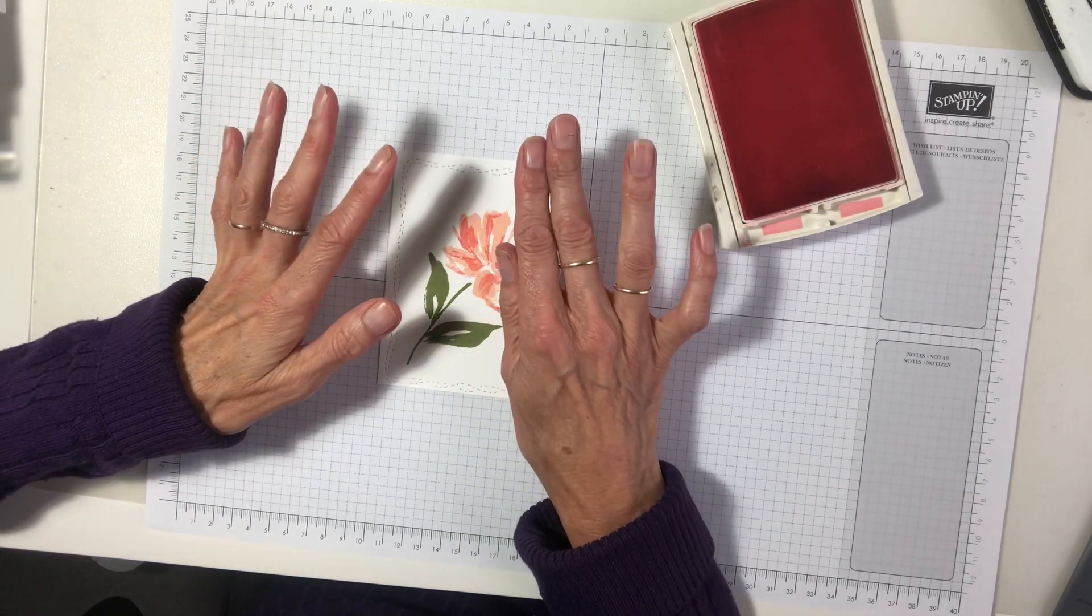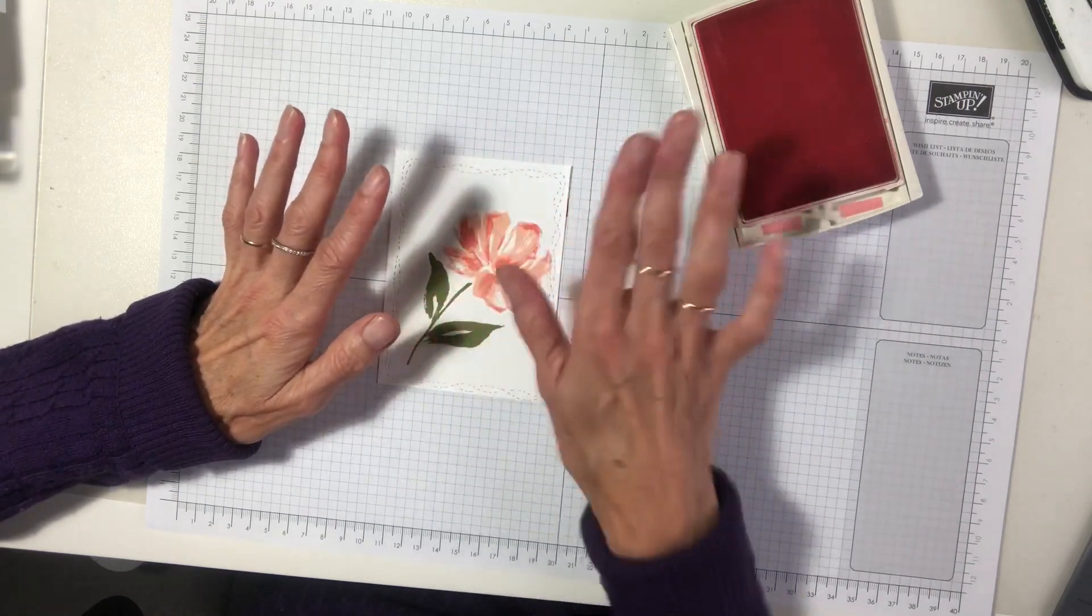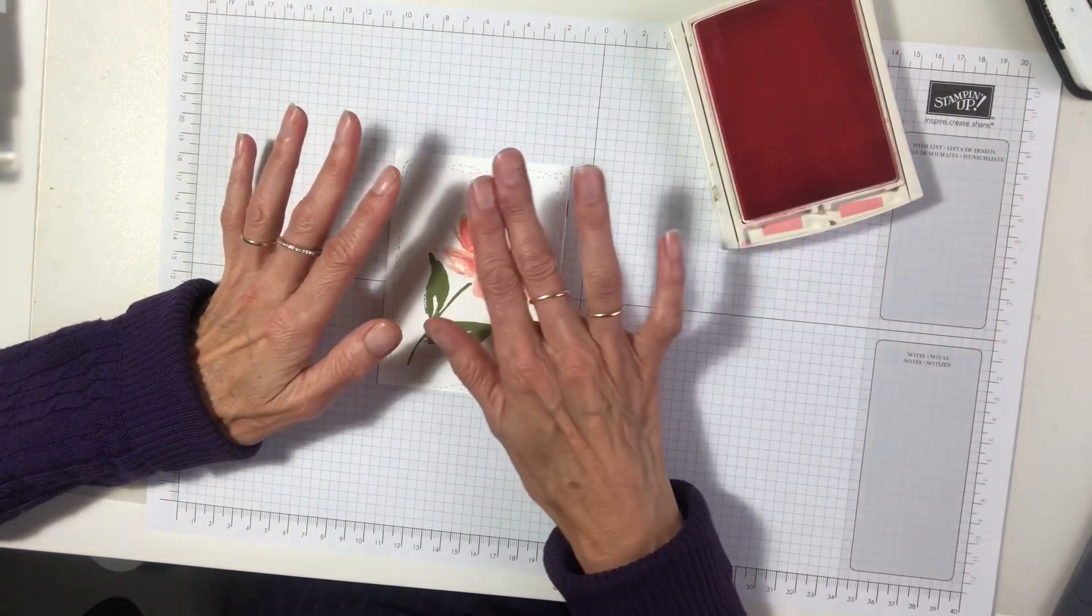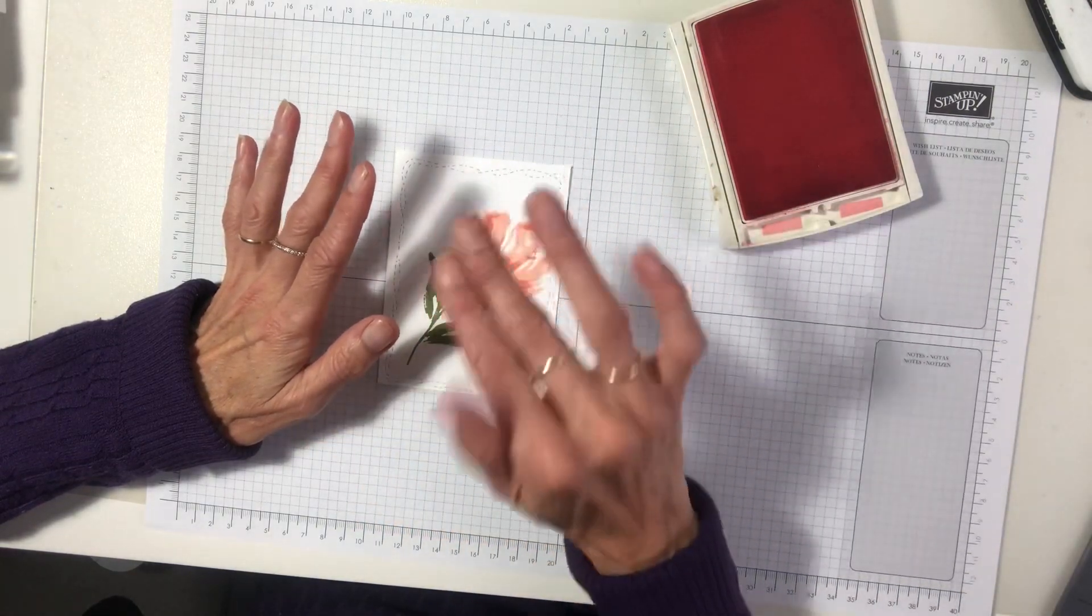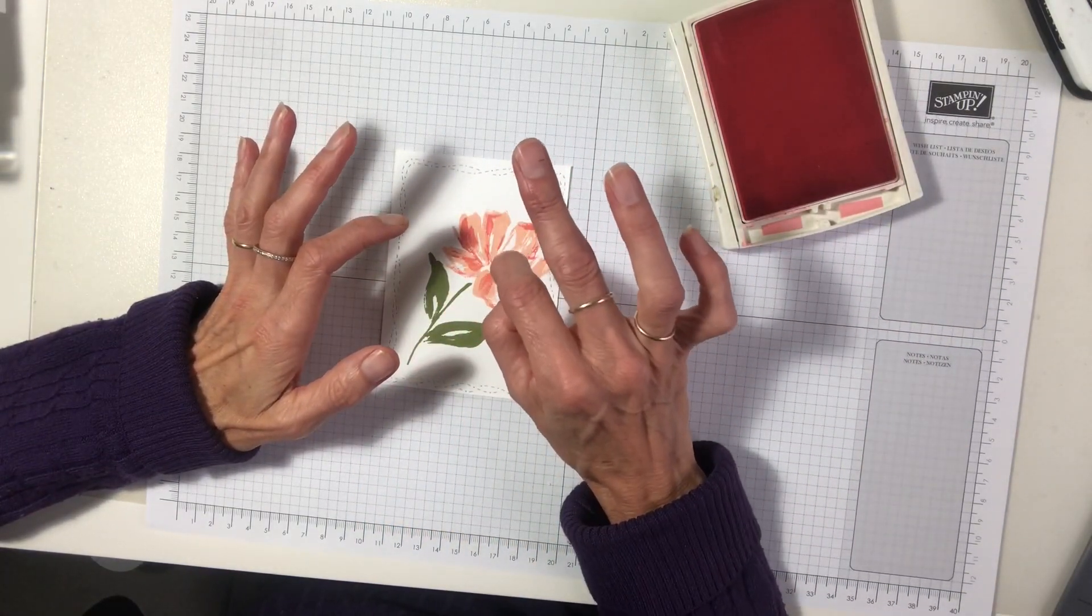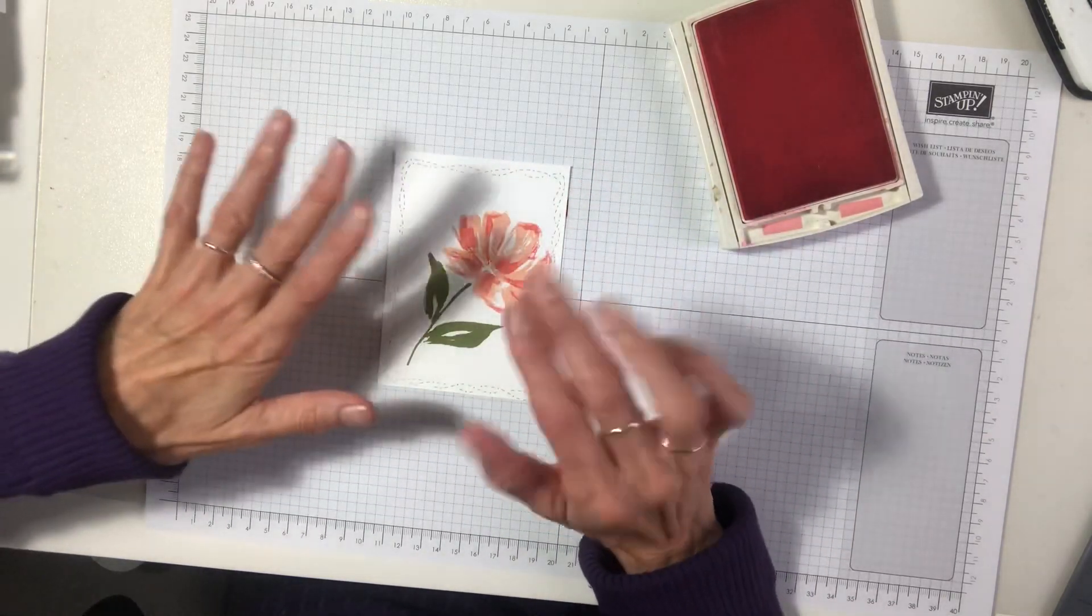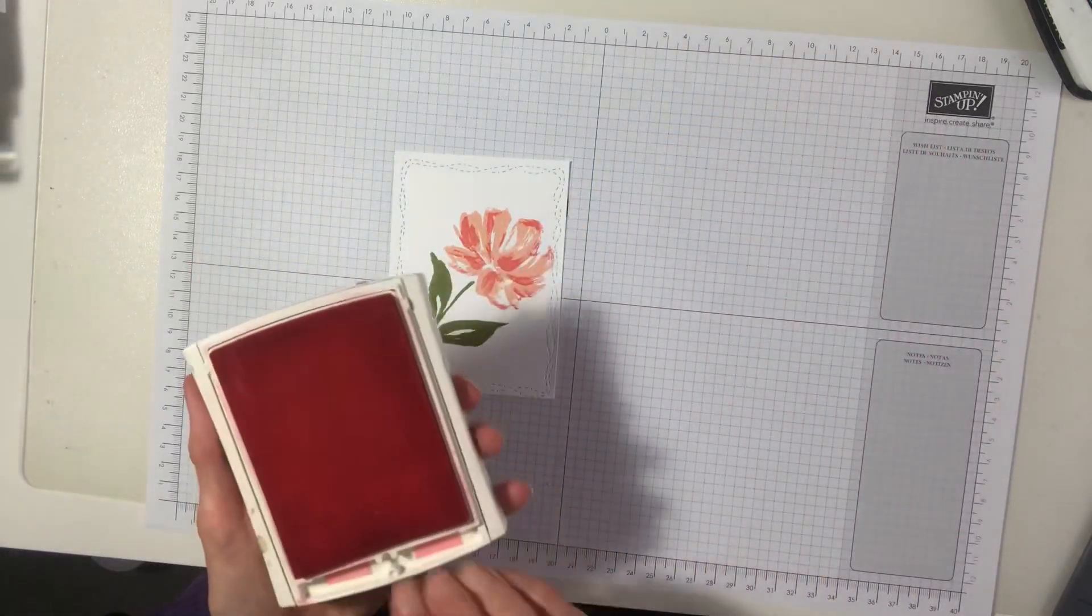stamp off the first one, the solid one. Ink it up, stamp it off on some scrap paper, stamp it down, then ink the line one on it straight on the flower. That gives you that stamping off and the different colour tones is what I'm trying to say.